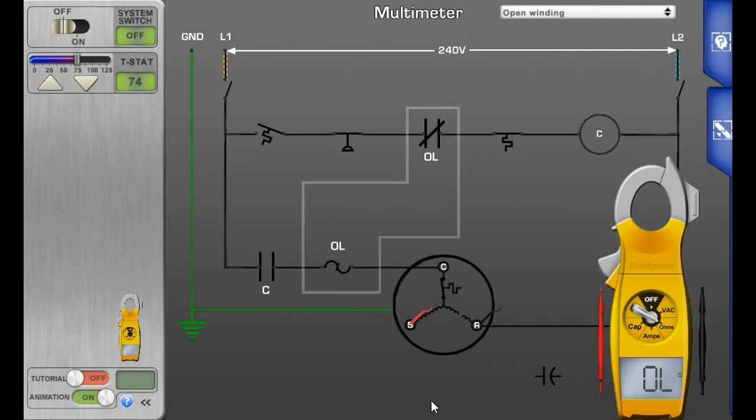You always got to make sure—there's an awful lot of compressors that are condemned for an open winding because the internal overload is open due to overheating. Let's look at that one more time. Common to run: overload. That shows an open. What you want to make sure is that the internal overload is not tripped, so you're going to go start to run.